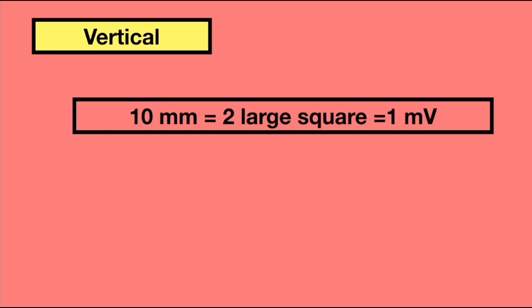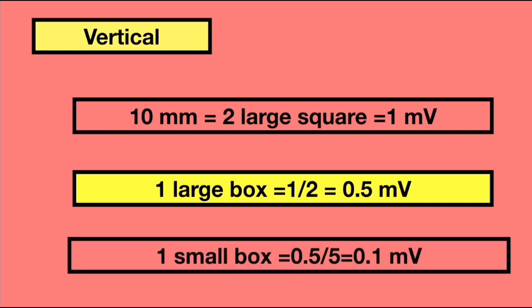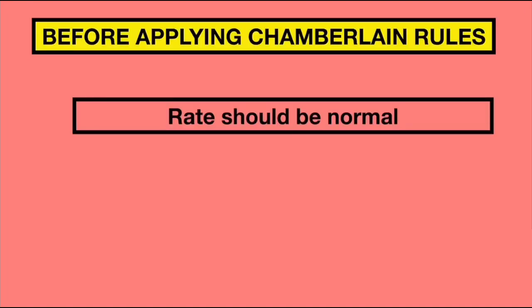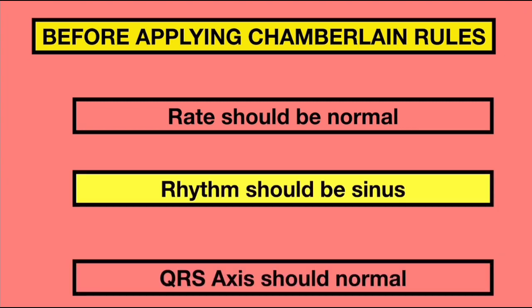In the vertical axis, we had already learned that 10 mm equals 1 mV, which is equal to 2 large boxes. Hence, 1 large box equals 0.5 mV, which means 1 small box equals 0.1 mV. Before applying Chamberlain's rules, ensure that the rate of the ECG is normal — that is 60 to 100 beats per minute — the rhythm should be sinus, and the QRS axis should be normal, that is minus 30 degrees to 100 degrees.